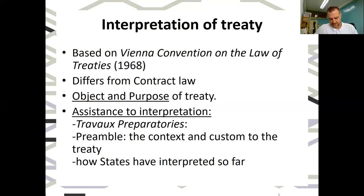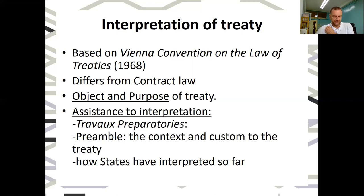In terms of interpretation, we also have the preamble of the treaty. Next week we'll look at the Universal Declaration of Human Rights and its preamble, which details how you understand human rights. The preamble — the part of the treaty that comes before the actual working articles — helps to assist the understanding and interpretation of the treaty. And finally, how states have interpreted it so far; what's been the practice of interpretation. So states have discretion, but it's limited by the treaty's purpose, how other states understand it, and how it was meant to be understood.